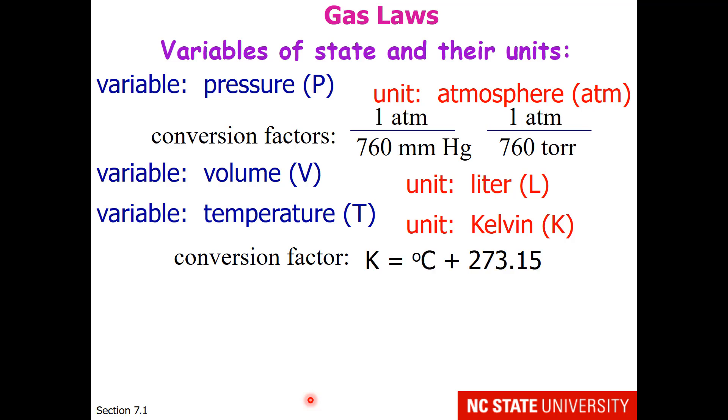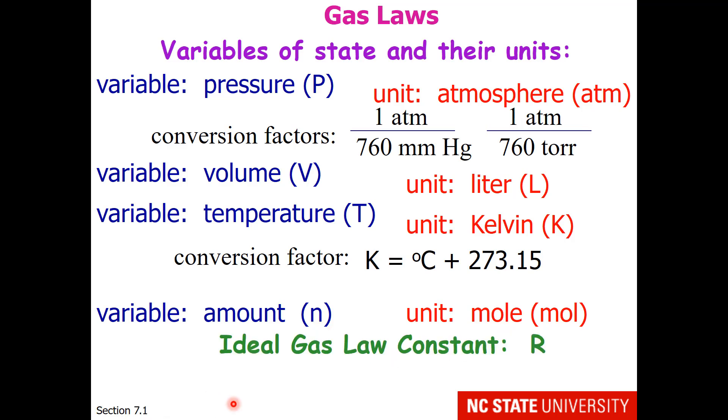There are conversion factors. Kelvin is equal to degrees Celsius plus 273.15. That relationship will also be covered shortly. Gases also have a variable amount. Many students know N as the principal quantum number. It is also a symbol for moles of material. And then there is the ideal gas law constant, known as capital R.